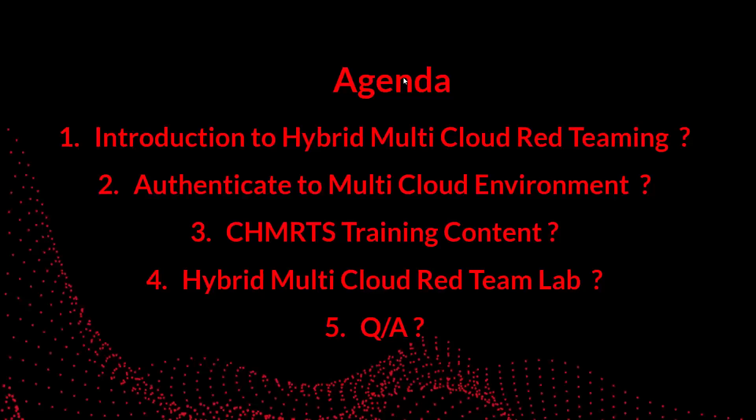The agenda of this webinar is to give an introduction about how you can perform red team operations on a hybrid multi-cloud environment. Most organizations are using multi-cloud as well as on-premises for their infrastructure, applications, and user authentication. As red teamers, performing operations across multi-cloud is challenging — we're mainly talking about the three most in-demand cloud providers: AWS, Azure, and GCP, as well as on-premises Active Directory environments.